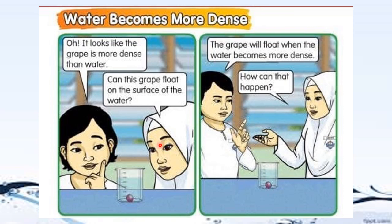Look at the two pupils and the elements they are observing. They are observing the crab in the beaker which is filled with water. Can you tell me the position of the crab? Is the crab floating on the water surface or sinking in water? Yes, the crab sinks in water. That means the crab is more dense than water.